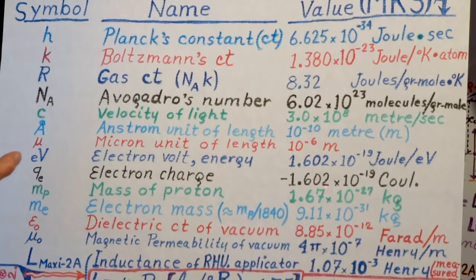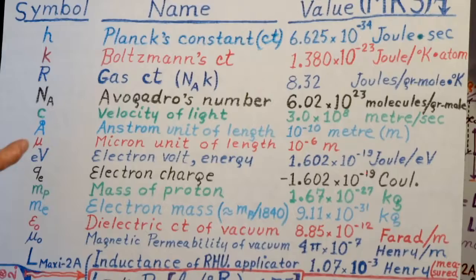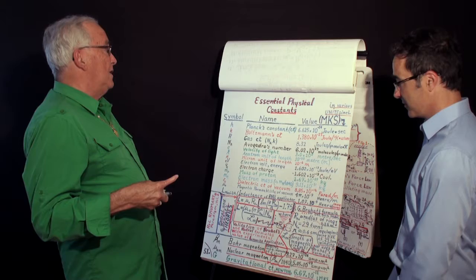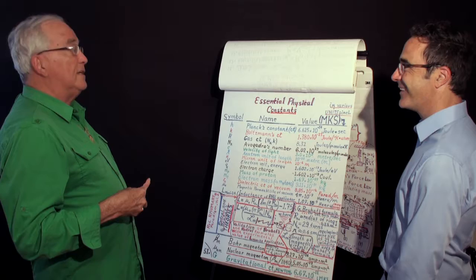Electron charge is 1.6 times 10 to the minus 19 coulomb. I've measured it in the Milliken experiment myself when I was in second year of engineering physics, but all the other students couldn't get it, but I did. I'm very happy about that. I like Milliken for this, because it's a basic unit.